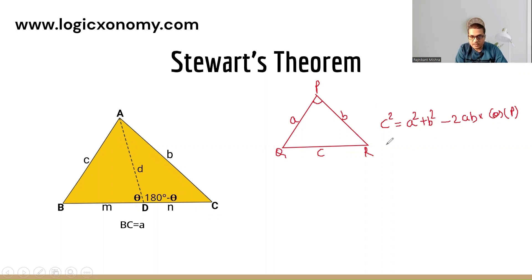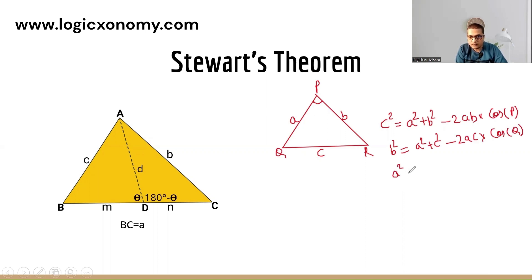Similarly, if you want to find the value of b², then b² = a² + c² − 2ac·cos Q. And similarly, a² = b² + c² − 2bc·cos R.